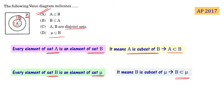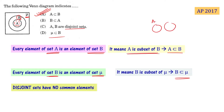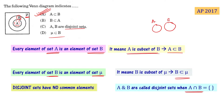Disjoint sets are sets that have no common elements. For example, if two circles A and B do not overlap at all, they are called disjoint sets. Mathematically, if A intersection B equals the empty set, then A and B are called disjoint sets.